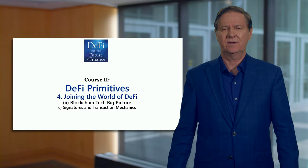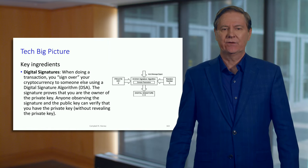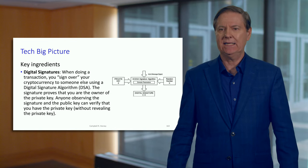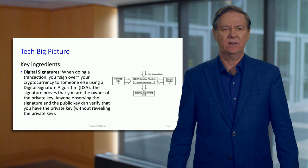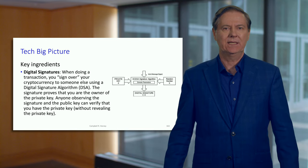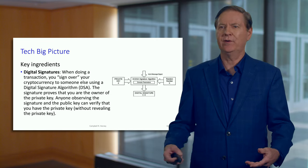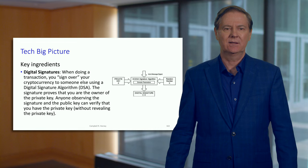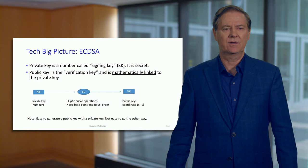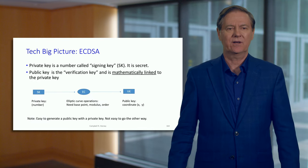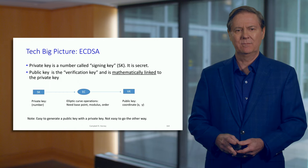Let me talk about signatures and some of the transaction mechanics. A digital signature is very important — it's the way a transaction is actually organized. If you're sending some Ethereum, you need to prove that you've got the private key, and that's where the digital signature comes in. You need to prove it without revealing the actual key. We use an algorithm to do this, so let's look at this in some detail.